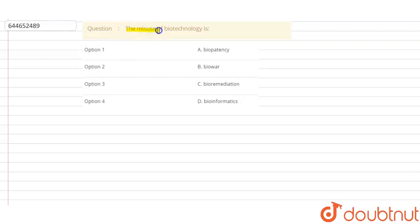The question asks: the misuse of biotechnology is... We have to determine which of the following options is a misuse of biotechnology. Option A: biopatency, option B: biowar, option C: bioremediation, option D: bioinformatics. When we talk about biotechnology,